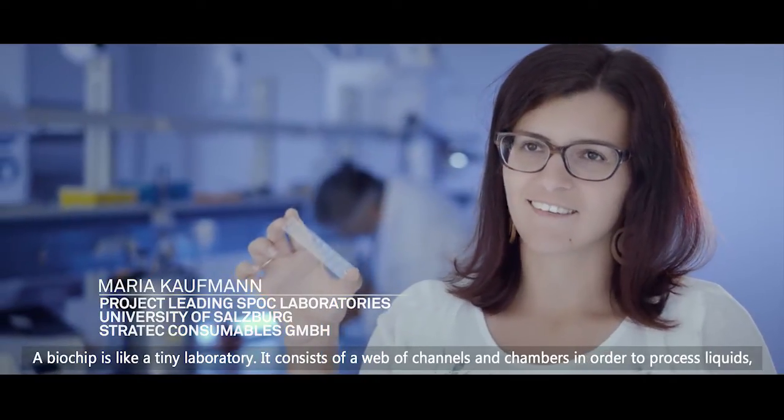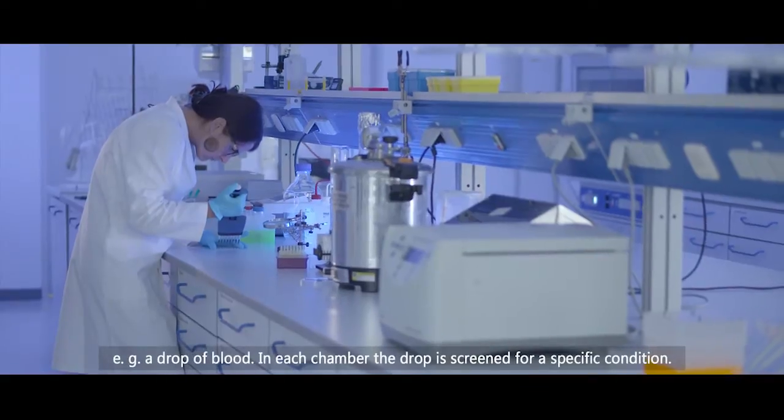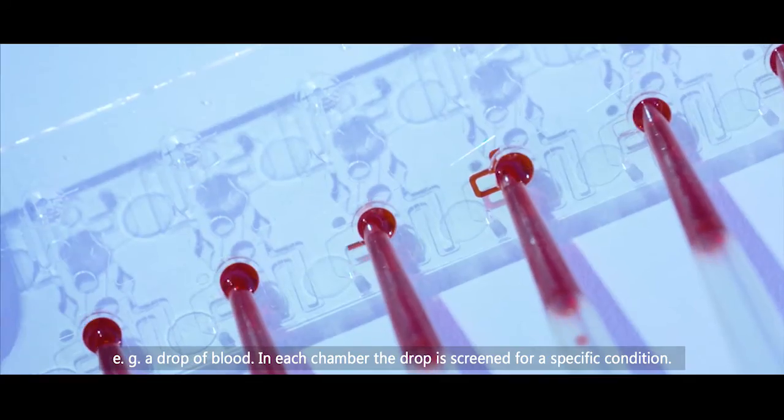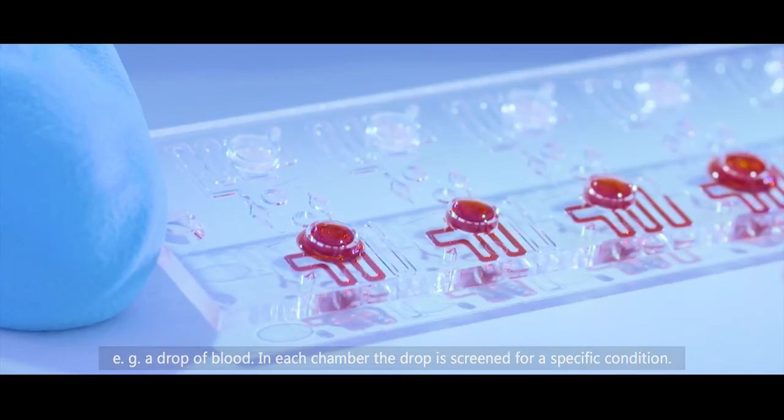A biochip is like a tiny laboratory. It consists of a web of channels and chambers in order to process liquids. For example, a drop of blood flows through it, and in each of these chambers the blood drop is examined for a very specific condition.